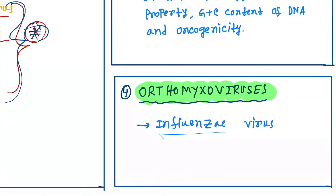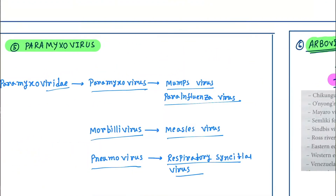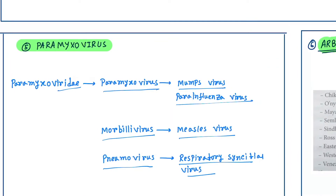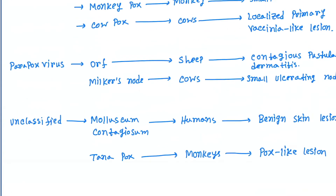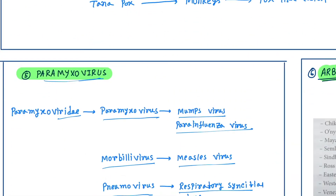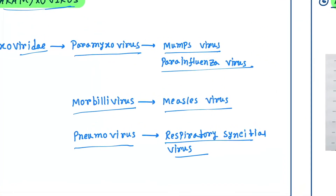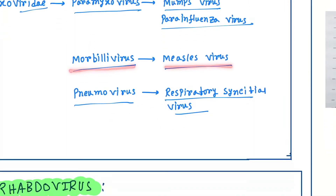For orthomyxovirus, the virus is influenza virus. Next is paramyxovirus — the family is Paramyxoviridae, with genera paramyxovirus, morbillivirus, and pneumovirus. Paramyxovirus includes parainfluenza viruses; morbillivirus — the virus is measles virus; pneumovirus — the virus is respiratory syncytial virus.